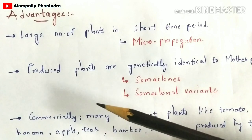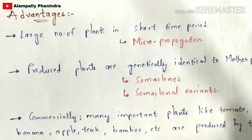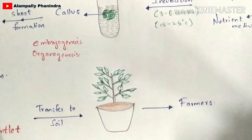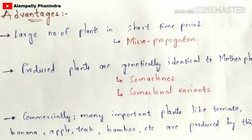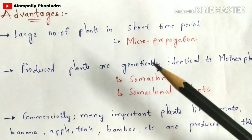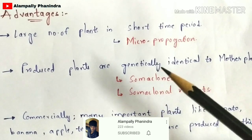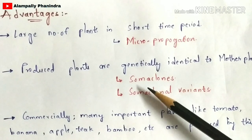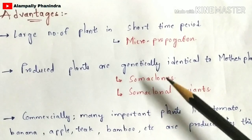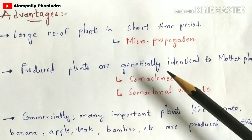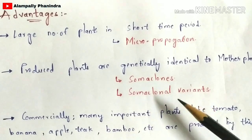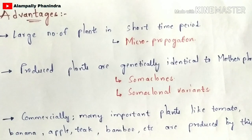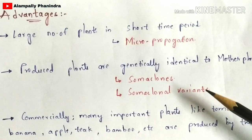The second advantage is that the plants produced are genetically identical to the mother plant, because the explant is taken from the mother plant itself. Plants that are genetically identical to the mother plant are called somaclones. However, in some cases, the plants produced are not genetically identical — those are called somaclonal variants, caused by genetic mutations occurring during the tissue culture process. This phenomenon is called somaclonal variation.